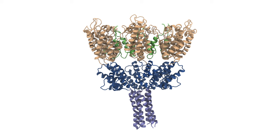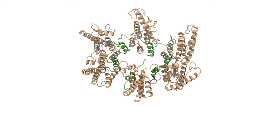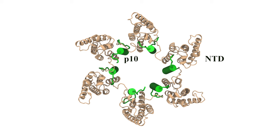Note how flexible the six-helix bundle is with respect to the rest of the lattice. This flexibility probably accounts for the lower resolution region observed in cryo-EM experiments. With the refined model, let's look at the top layer of the lattice, which consists of P10 and NTD. P10, highlighted in thick green tube, stabilizes the NTD hexamers by intra-hexameric interaction.